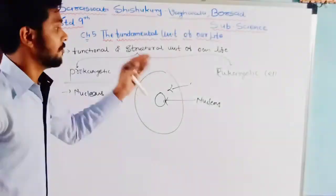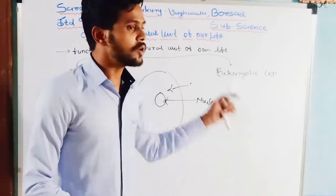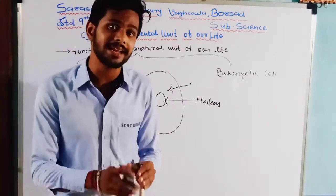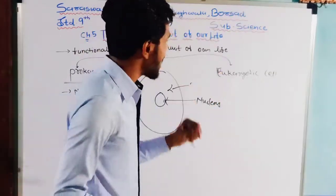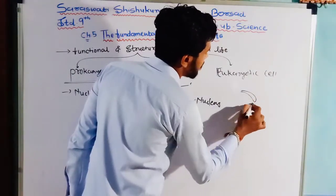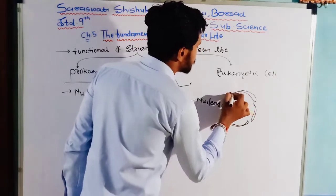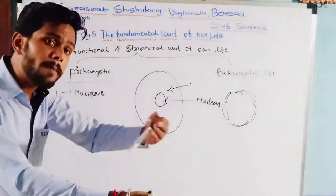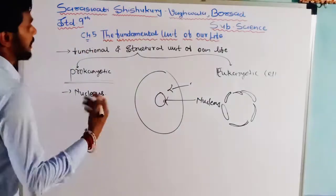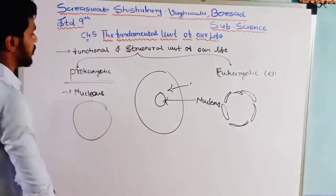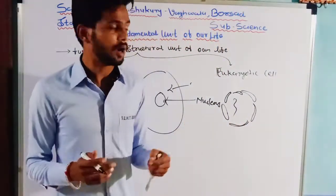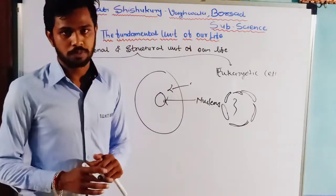In the eukaryotic cell, there is a well-defined nuclear membrane — it has a well-defined nucleus. The nucleus is covered by a membrane. Inside the nucleus, the prokaryotic cell contains only one chromosome, while the eukaryotic cell contains more than one or two chromosomes.